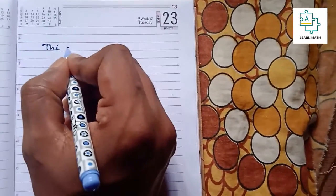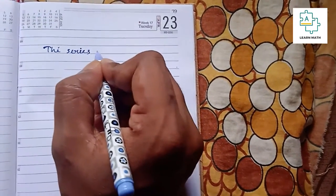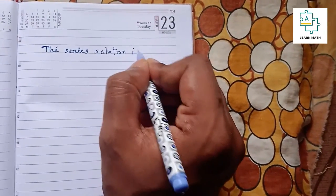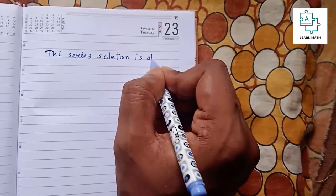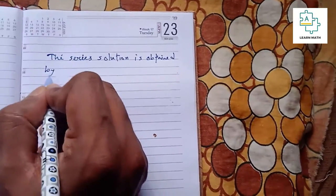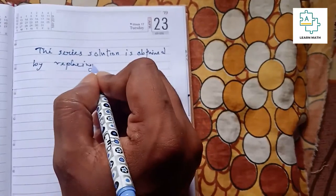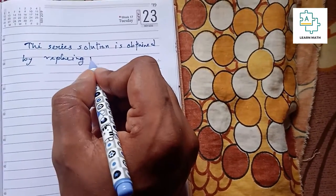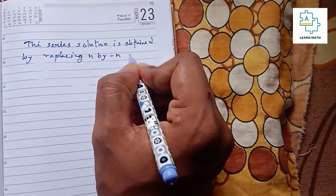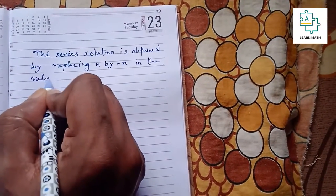The series solution is obtained by replacing n by minus n in the value of J_n.